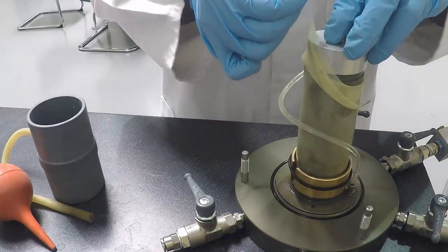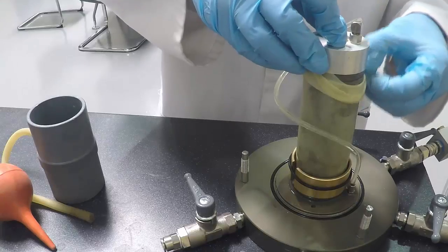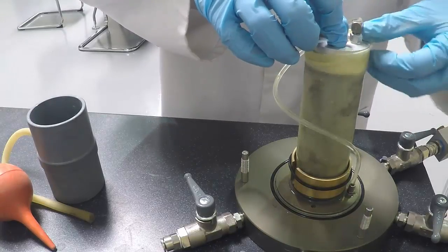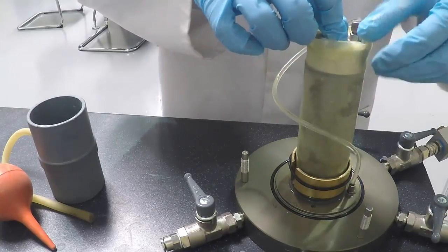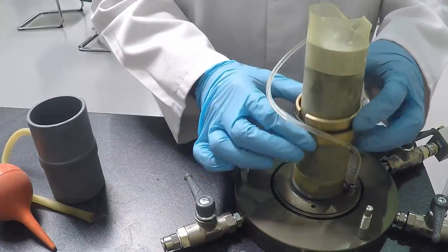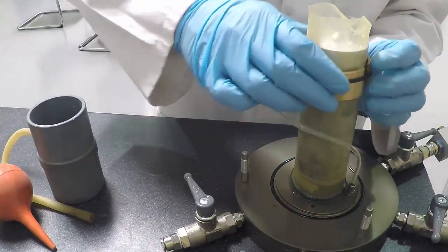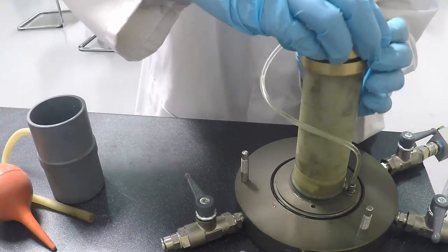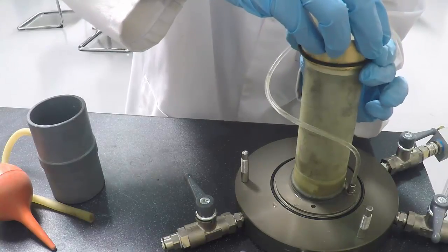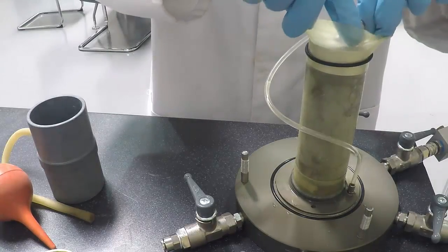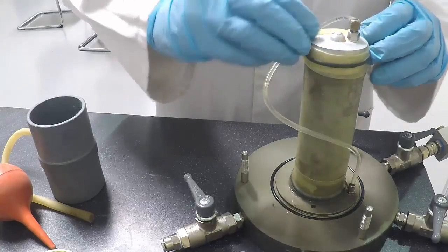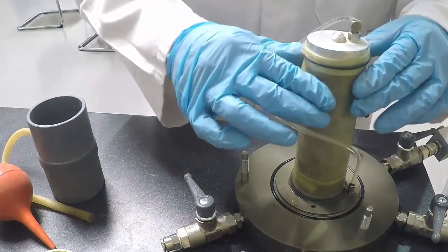Roll the membrane up over the top cap. Slide the O-ring off onto the top cap, being careful not to slide it onto the specimen. Remove the stretcher and fold the excess membrane down over the O-ring.